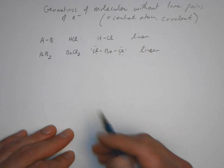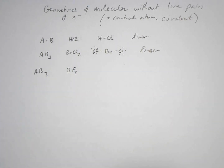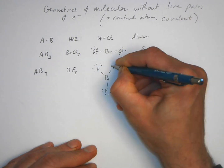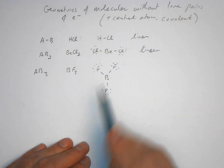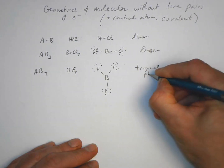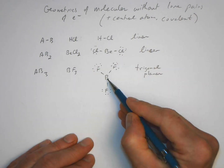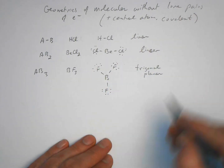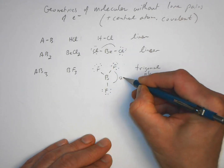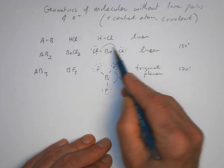For a central atom with three things attached — AB3 — the Lewis structure shows a central atom with no lone pairs and three bonding pairs. The shape is trigonal planar: all three substituents are in one plane, the central atom is in the middle, and they form a triangle with 120° bond angles. For AB2 we noted a bond angle of 180°.